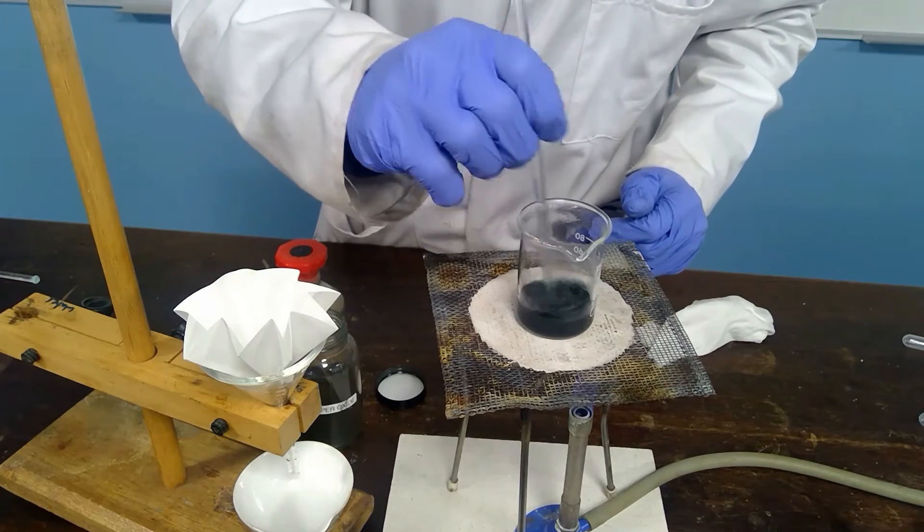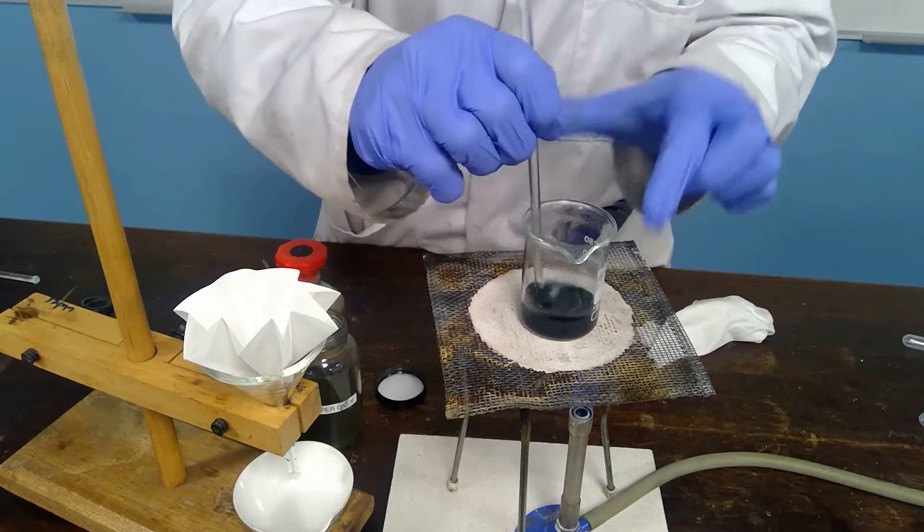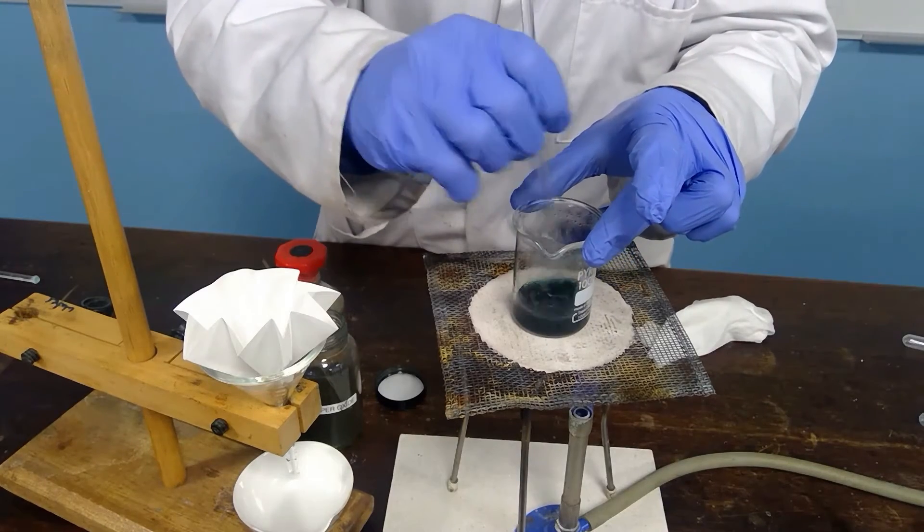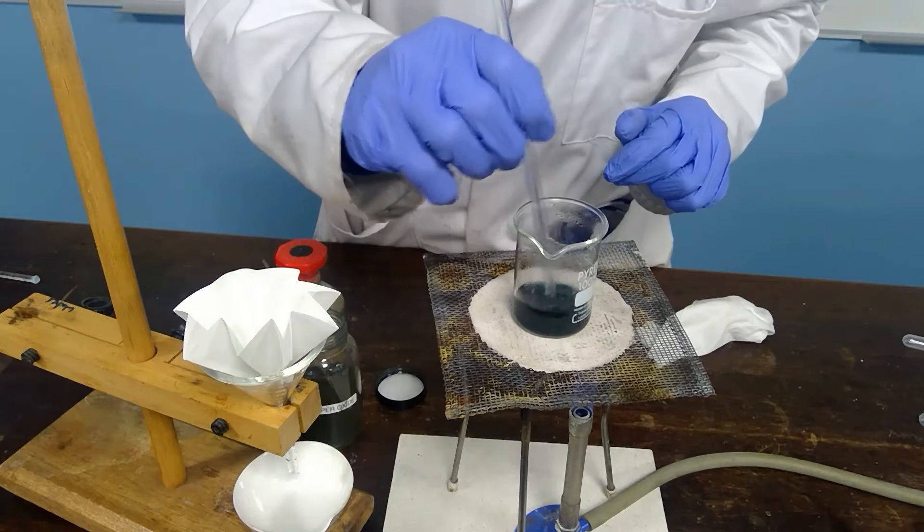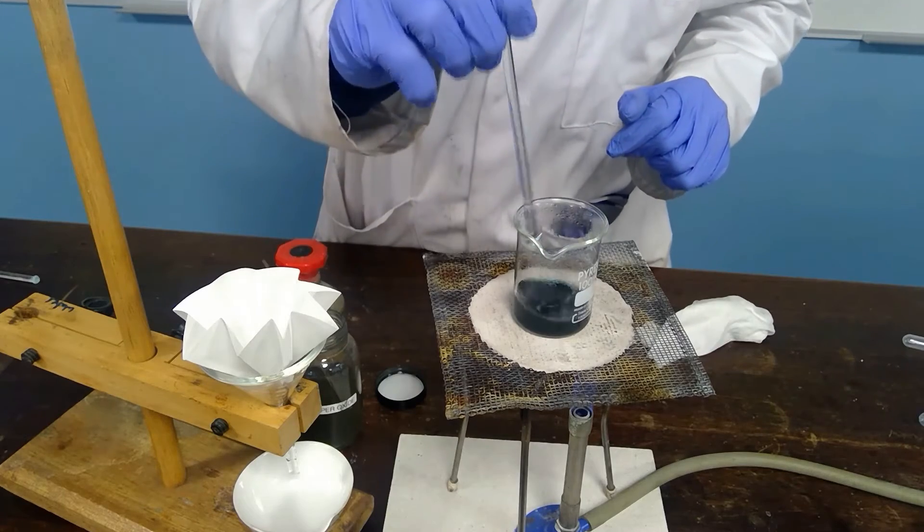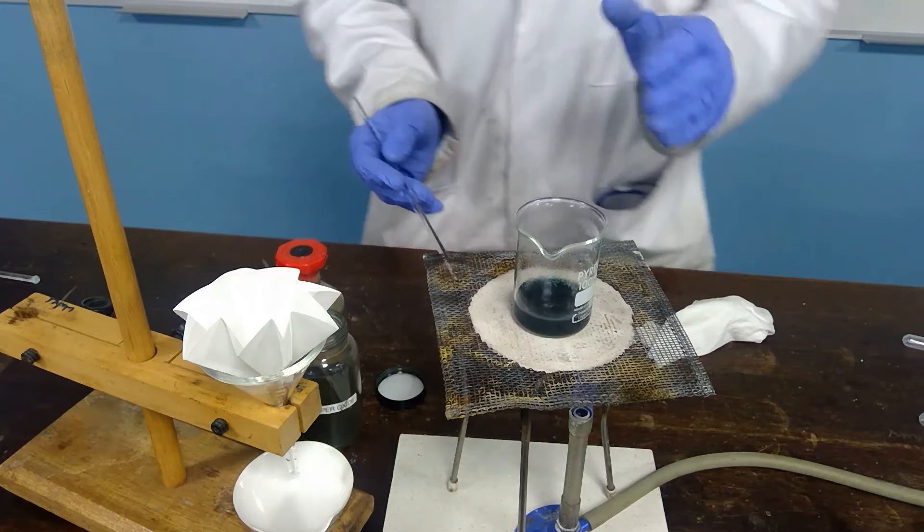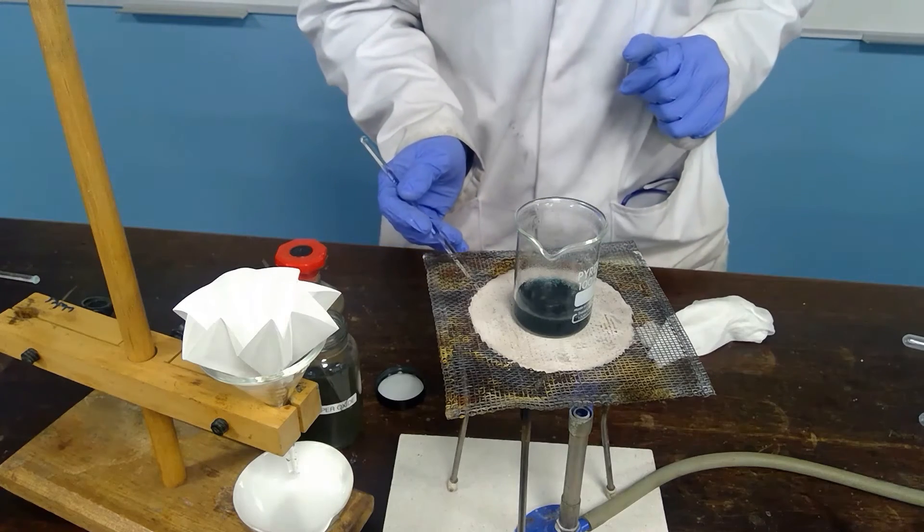You see that the black solid is not immediately disappearing despite the heating. And so this may be the point at which we have an excess of copper oxide. So we know that all the sulfuric acid on the assumption that this doesn't disappear. We know that all of the sulfuric acid will be neutralized because we have an excess of copper oxide.